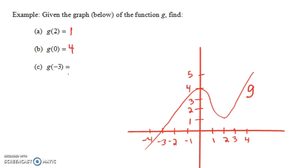And g of minus 3—notice that's an x-intercept there, goes right through the x-axis. g of minus 3 is at a height of 0, so g of minus 3 is 0.